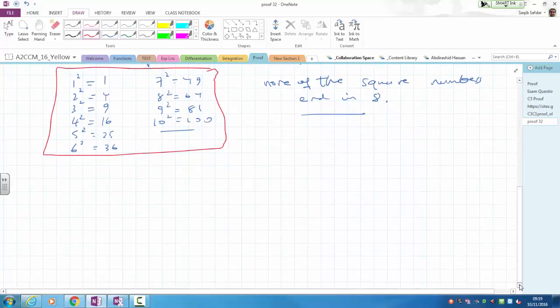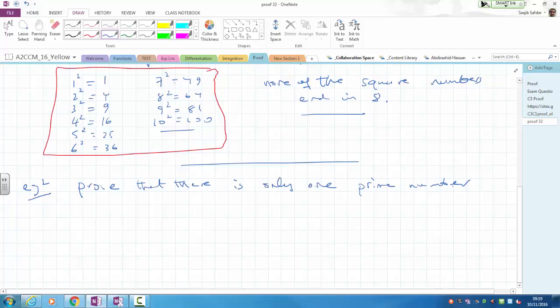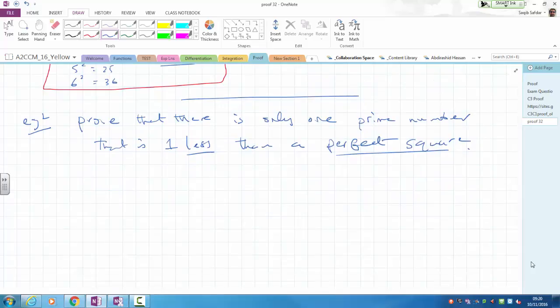Shall we do another one? Let me do another one, because it was prime numbers. And that's quite a nice one. Prove that there is only one prime number that is one less than a perfect square. There's only one prime number that exists like that. So there's going to be some square number. And one less than that is a prime.